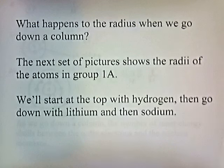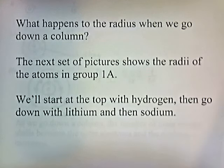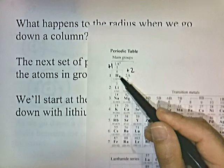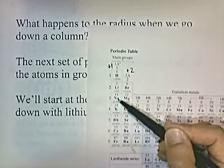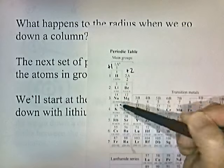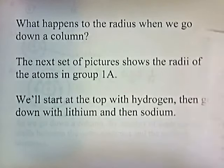So what happens to the radius when we go down a column? The next set of pictures show the radii of the atoms in group 1A. We'll start at the top with hydrogen and then go down with lithium and then sodium. I'm going to draw a picture of hydrogen, lithium, and sodium. Notice that we're going down the column on the periodic chart, and we'll see what happens to the radius as we go down.